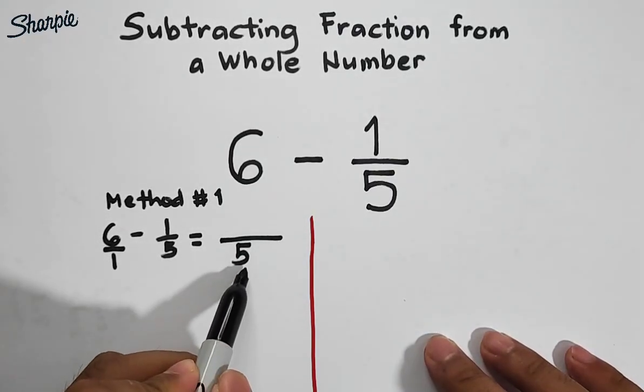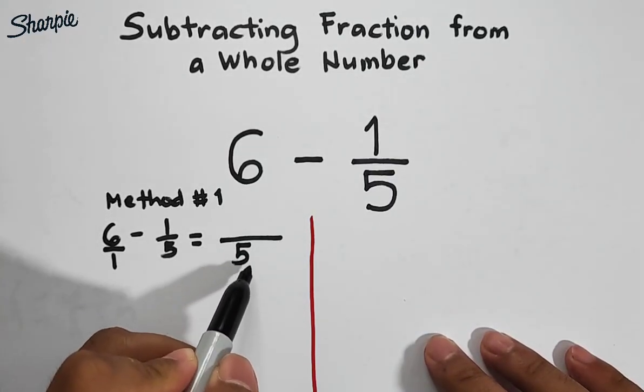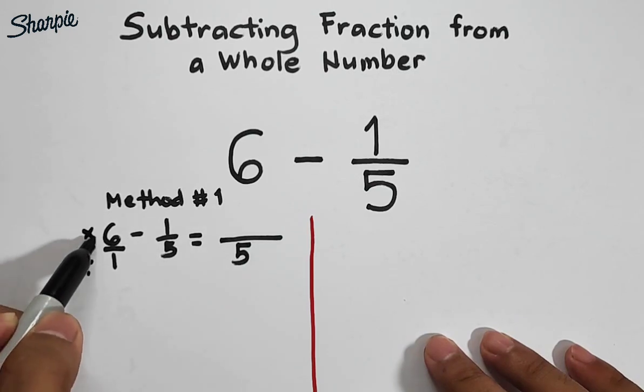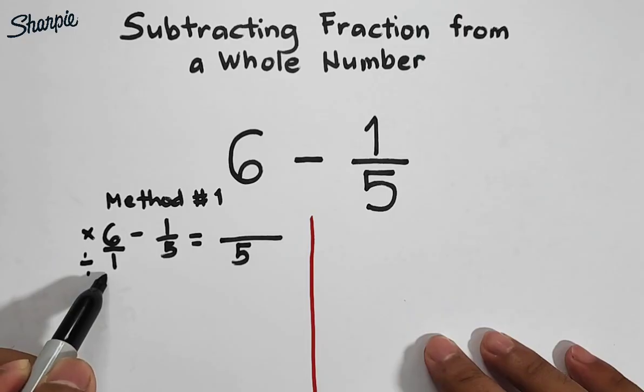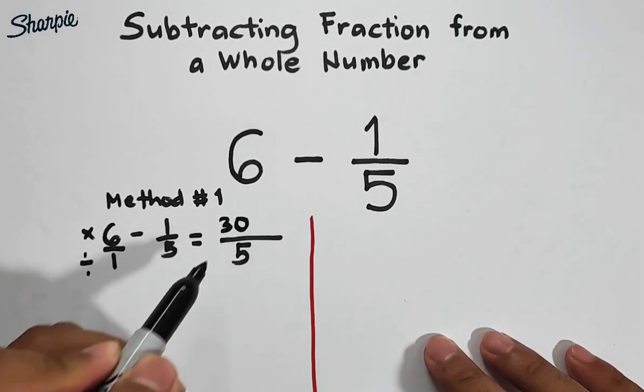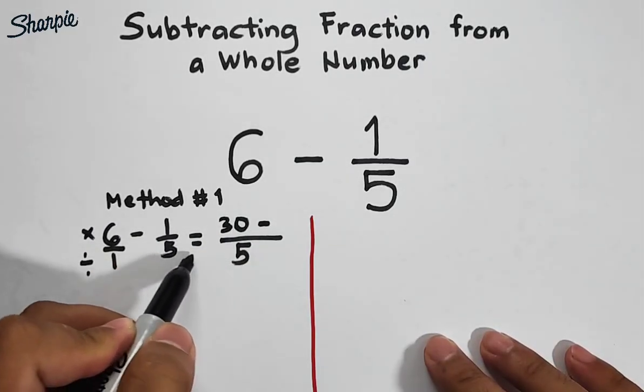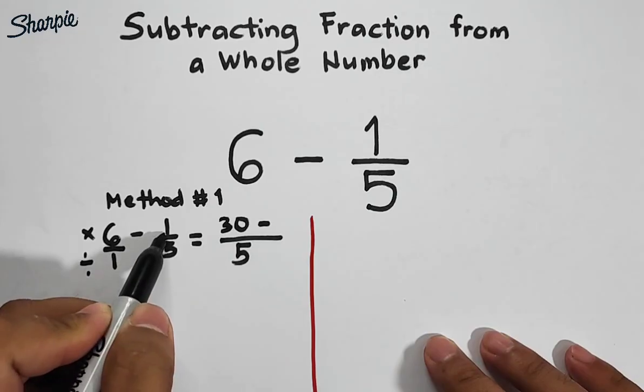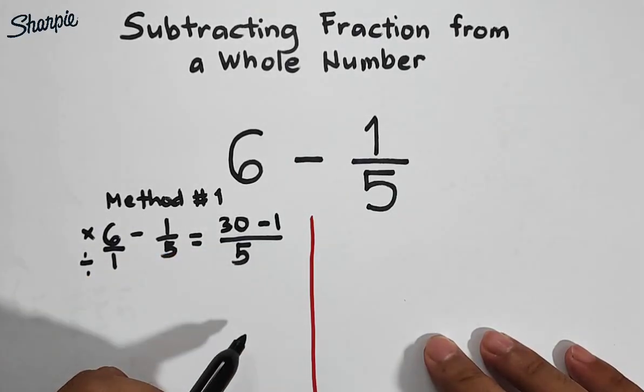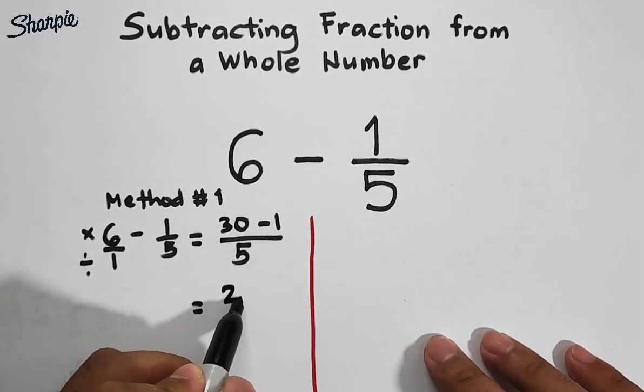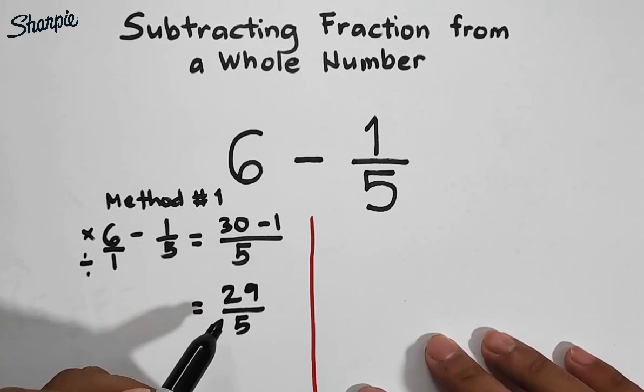Next, we divide 5 by 1 and multiply by 6. So 5 divided by 1 is 5 times 6, that equals 30. Then 5 divided by 5 is 1. So we have 30 minus 1, that is 29 over 5. We can consider this as our final answer.